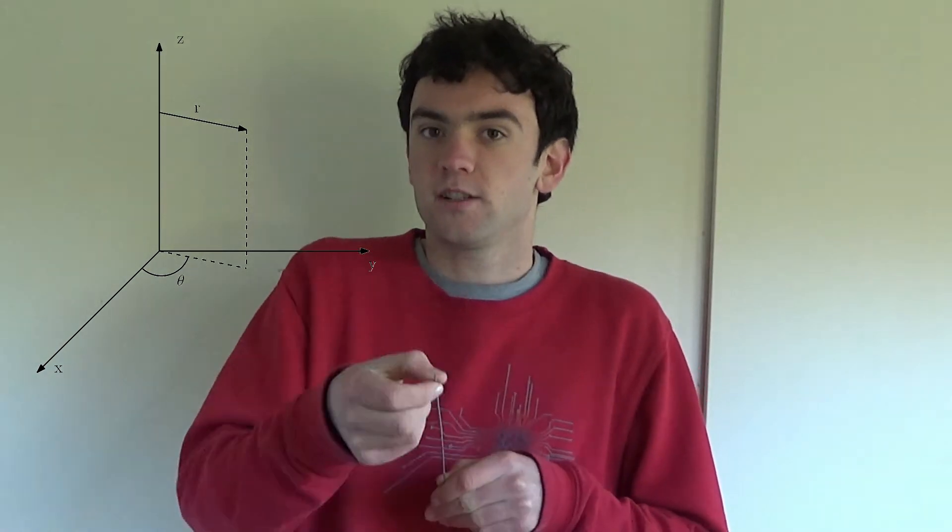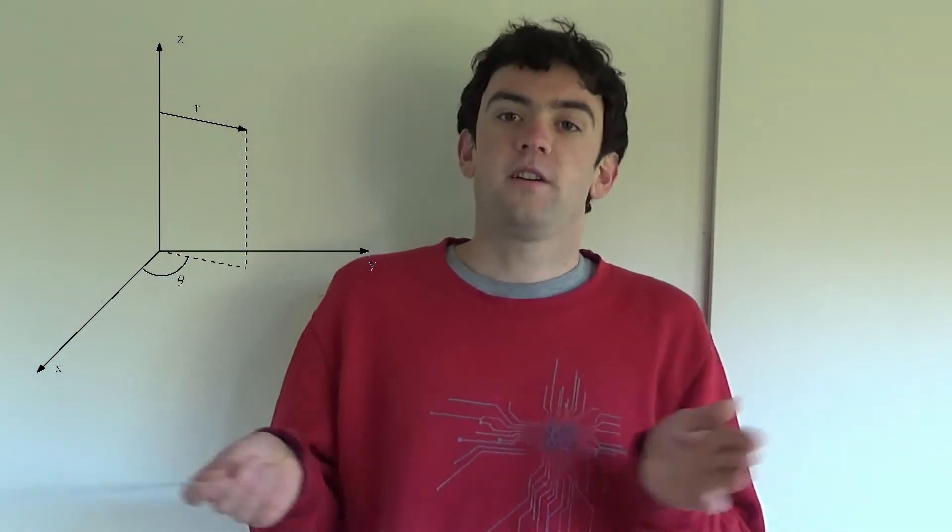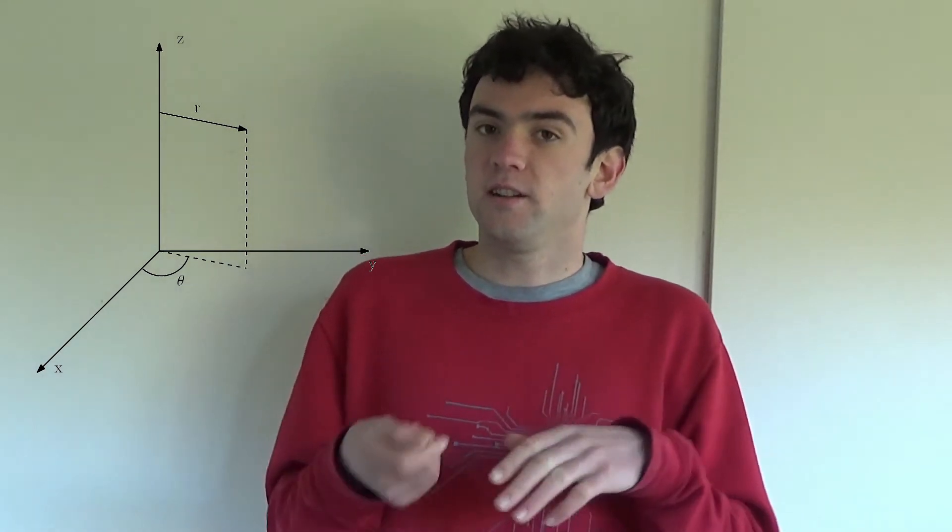This is polar coordinates, and we can turn this into cylindrical polar coordinates by also taking some z direction as the length along the wire. So here, instead of x, y and z, we have r, theta and z.